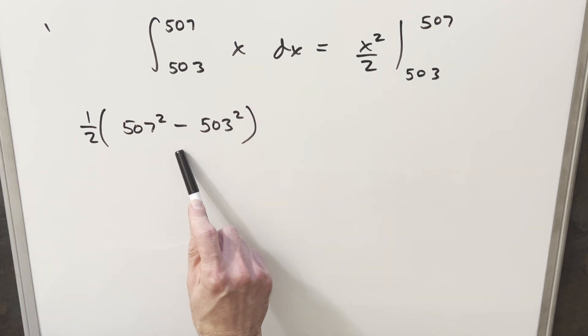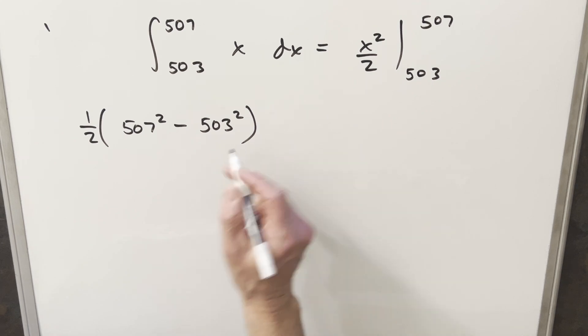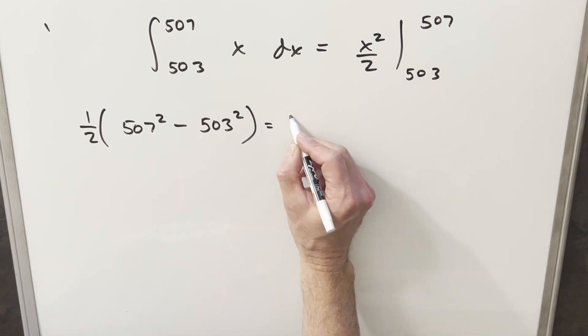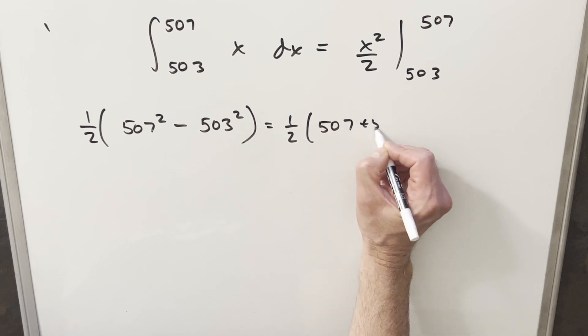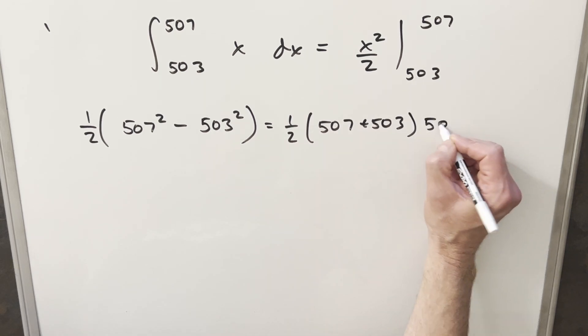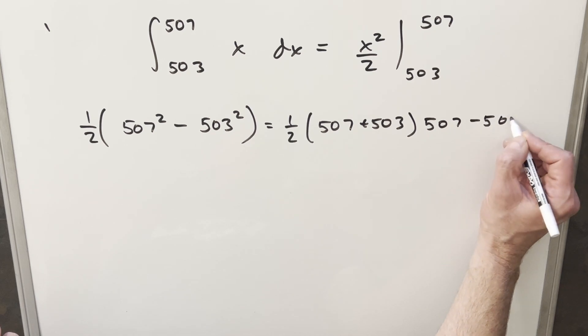And I don't want to try to think too hard or use a calculator or anything. So what I want to do is see this as a difference of two squares. We can write this as one-half, 507 plus 503, times 507 minus 503.